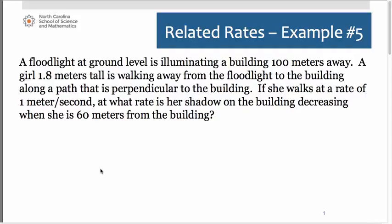Hi everyone, let's take a look at a related rates problem that is going to involve proportions with similar triangles. A floodlight at ground level is illuminating a building 100 meters away. A girl, 1.8 meters tall, is walking away from the floodlight to the building along a path that is perpendicular to the building. If she walks at a rate of 1 meter per second, at what rate is her shadow on the building decreasing when she is 60 meters from the building?